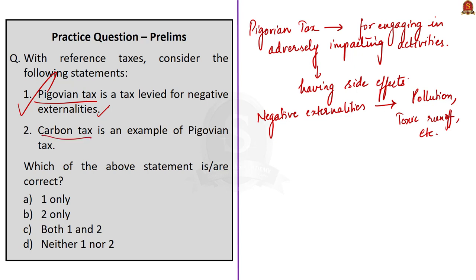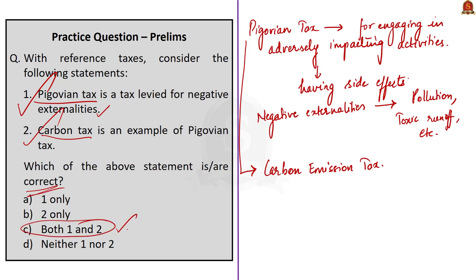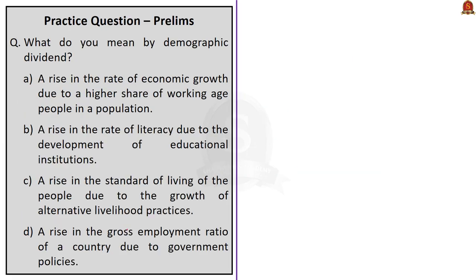Statement 2: Carbon tax is an example of Pigovian tax — this is also correct, as a carbon emissions tax levied on companies burning fossil fuels is one of the most popular Pigovian taxes. Other examples include taxes on plastic bags and paper bags, such as those in Europe that encourage consumers to bring reusable bags. Both statements are correct, so the answer is Option C — both 1 and 2.